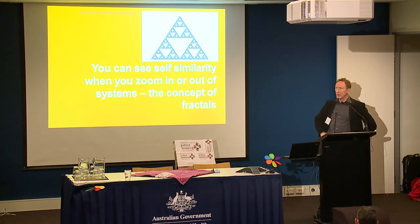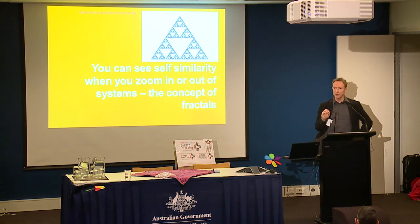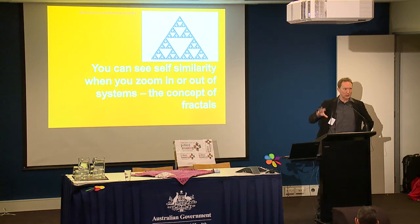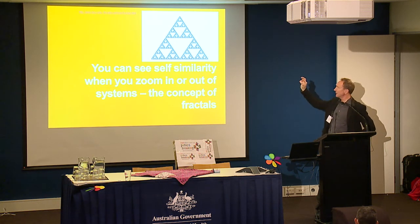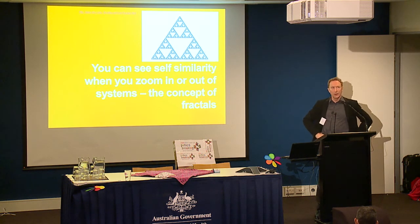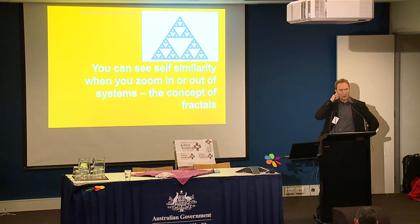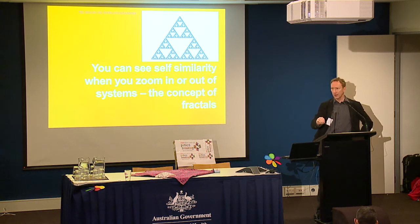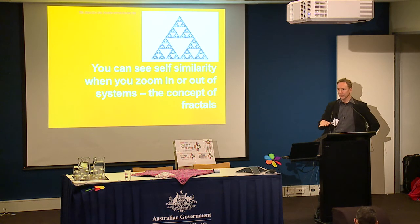Another thing about complex systems is this notion of self-similarity. Many of you would have seen images of Mandelbrot fractals. This is another example of a fractal — a triangle pattern that is infinite, it just keeps going. And the more you zoom into that set of triangles, the more you will keep seeing them. I tend to think if I go into an organisation, I find there's just as much complexity if I'm working with a section or a team as if I'm working at the whole organisation level. There's a self-similarity of complexity and issues at all levels.